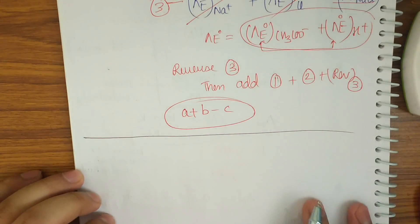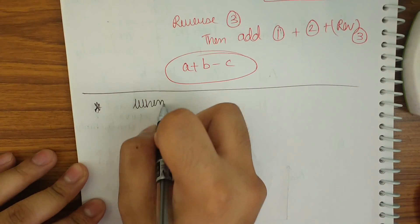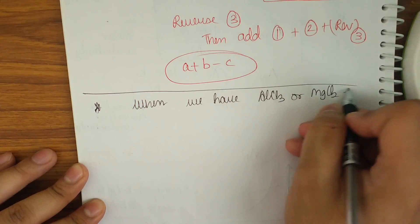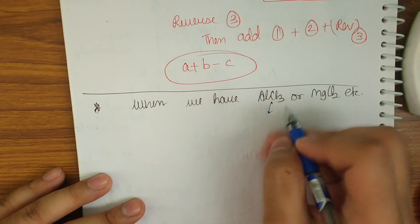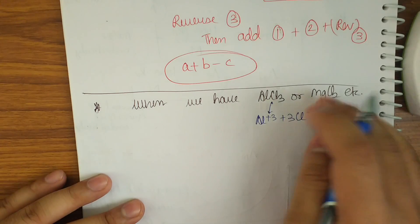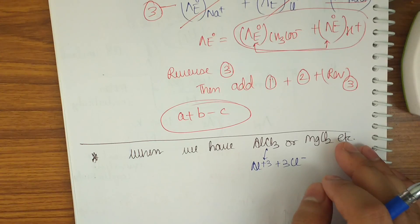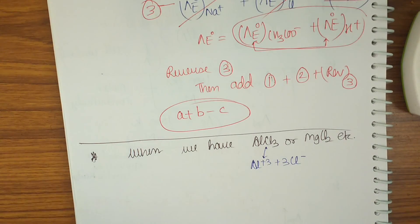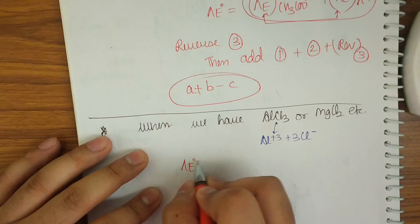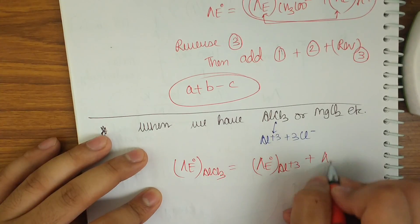Now let me address an important point. When we have AlCl3 or MgCl2 — compounds that dissociate into multiple ions, like Al³⁺ + 3Cl⁻ giving four ions — the calculation differs from the two-ion case. We must account for the number of ions in molar conductivity calculations.